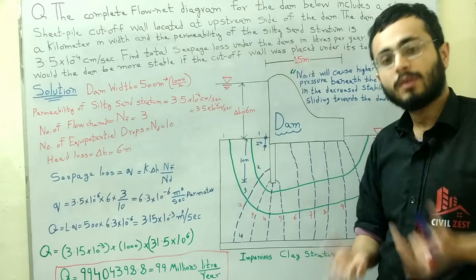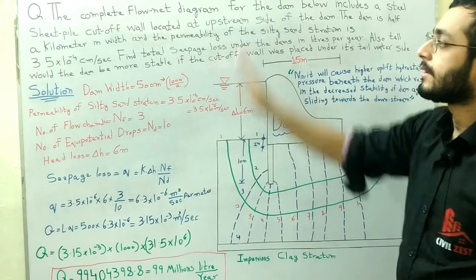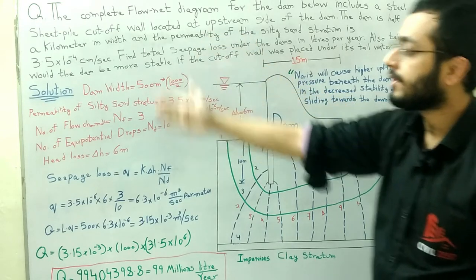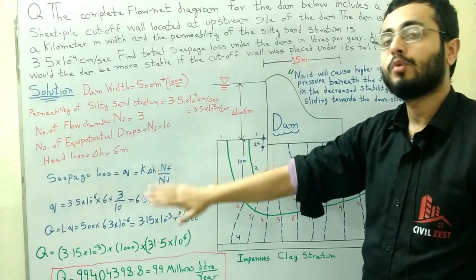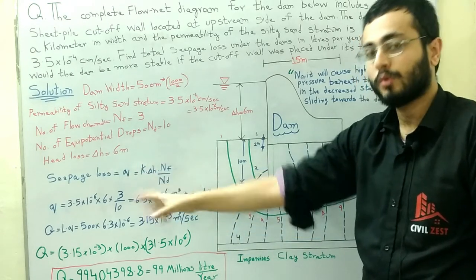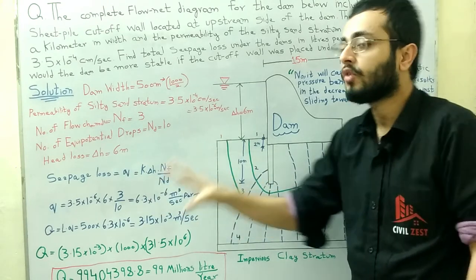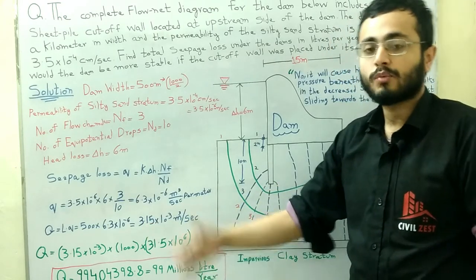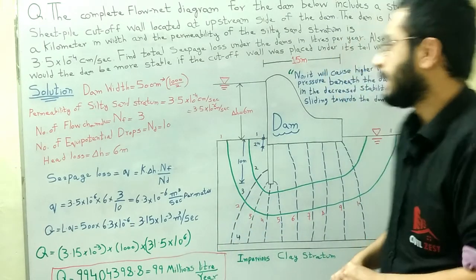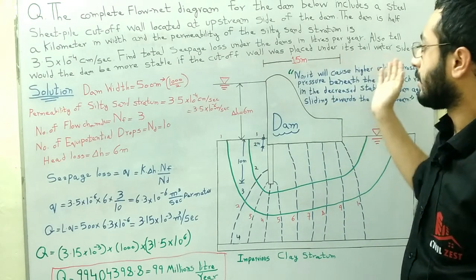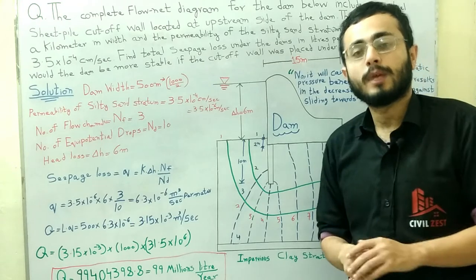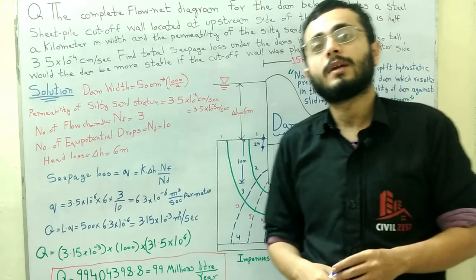To summarize today's lecture: we solved a complete flow net numerical to find the seepage loss of the entire dam in liters per year. We used the formula q = k × Δh × Nf / Nd, found the total dam seepage loss as capital Q = L × q, applied unit conversion to get approximately 99 million liters per year, and answered the stability question. Hope you liked this video — please subscribe to the channel.